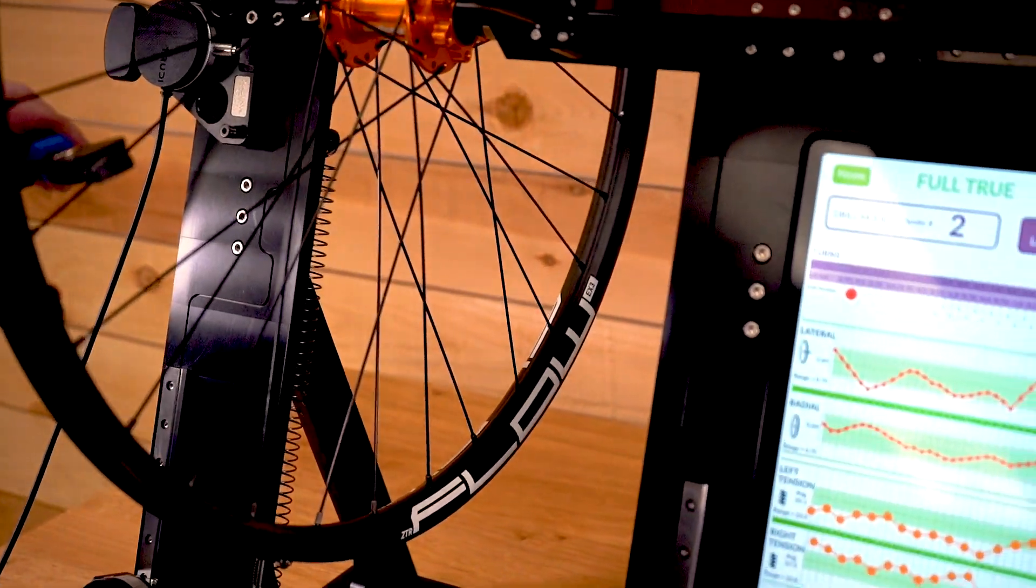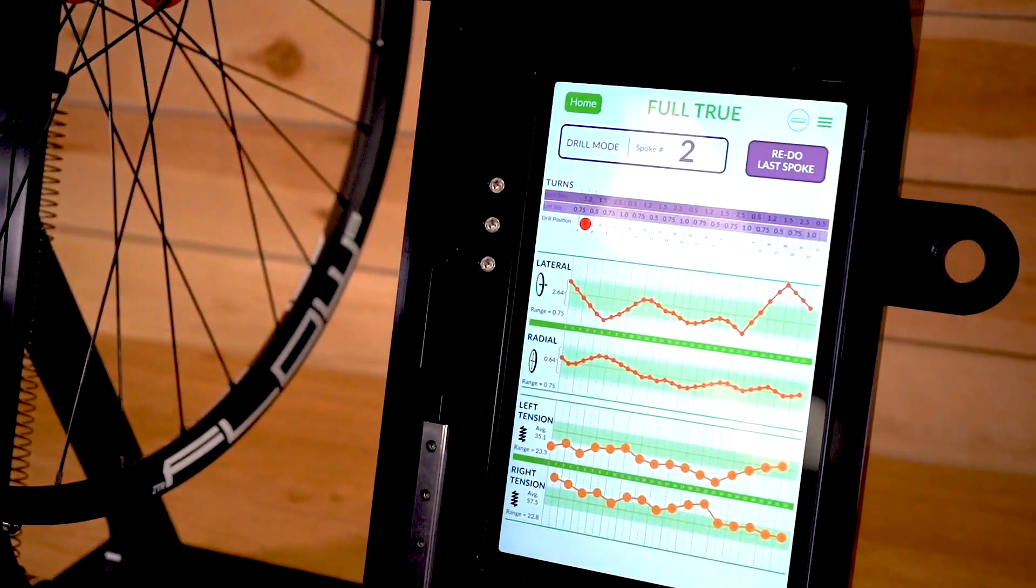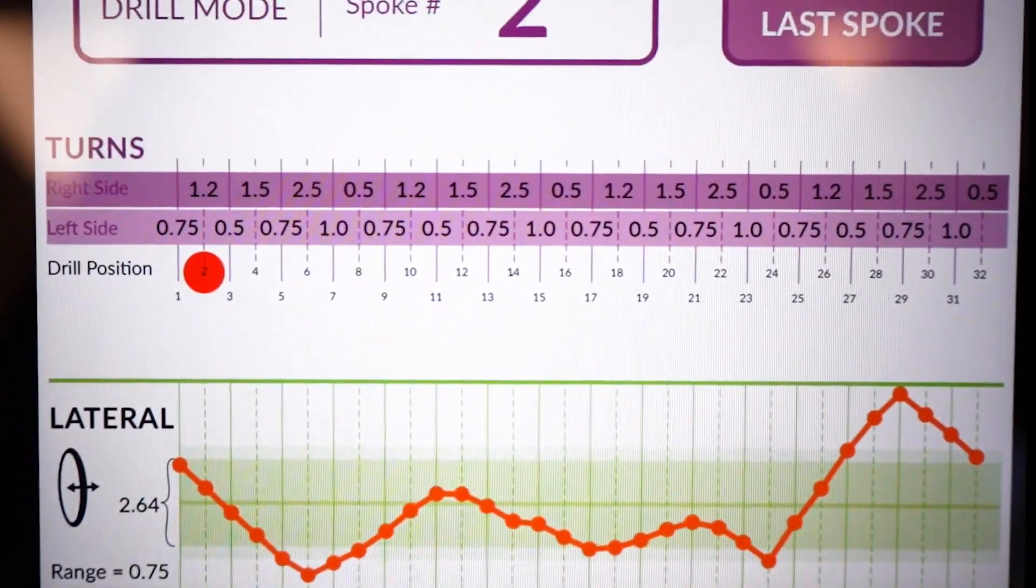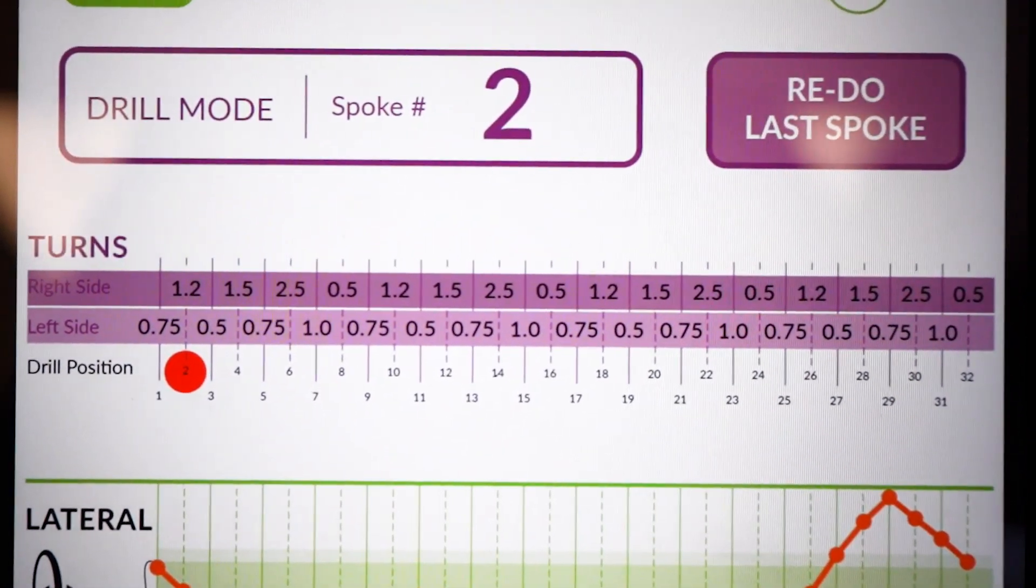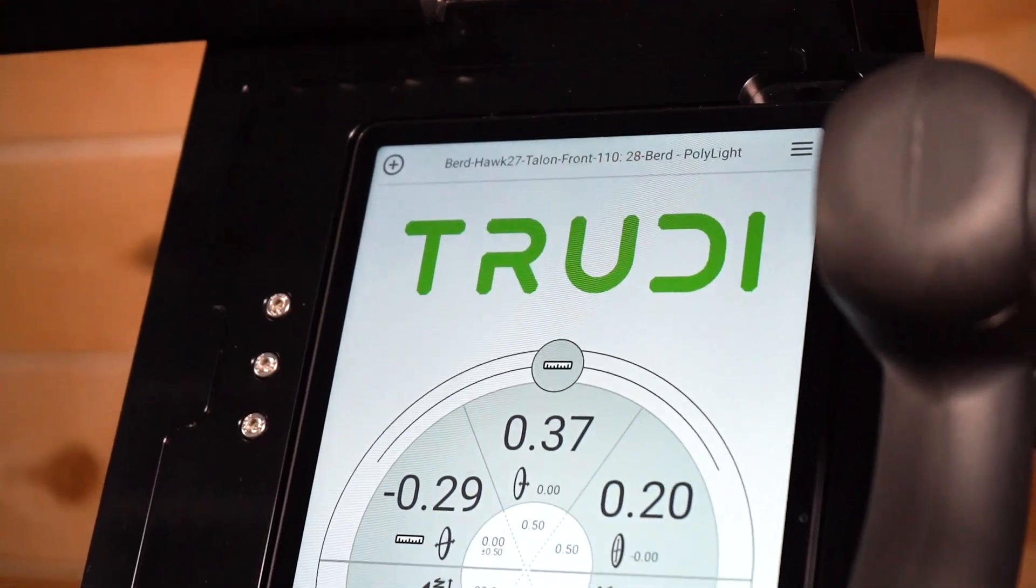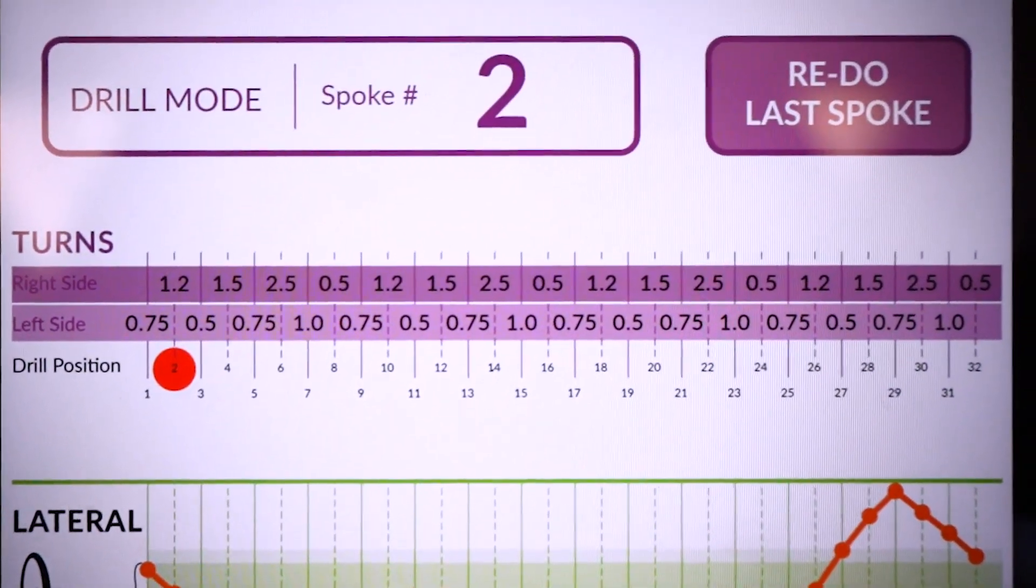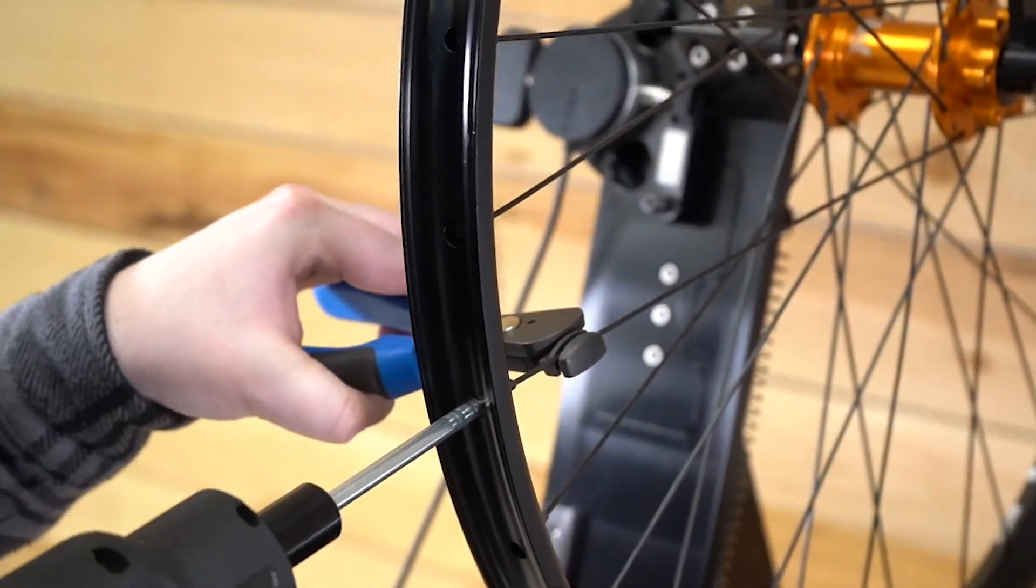Now, Trudy has a complete digital profile of the wheel including the lateral, radial, dish, and spoke tension at every point. Its advanced algorithm works like magic, calculating the exact number of turns needed for each spoke so the wheel can be trued in a single pass.